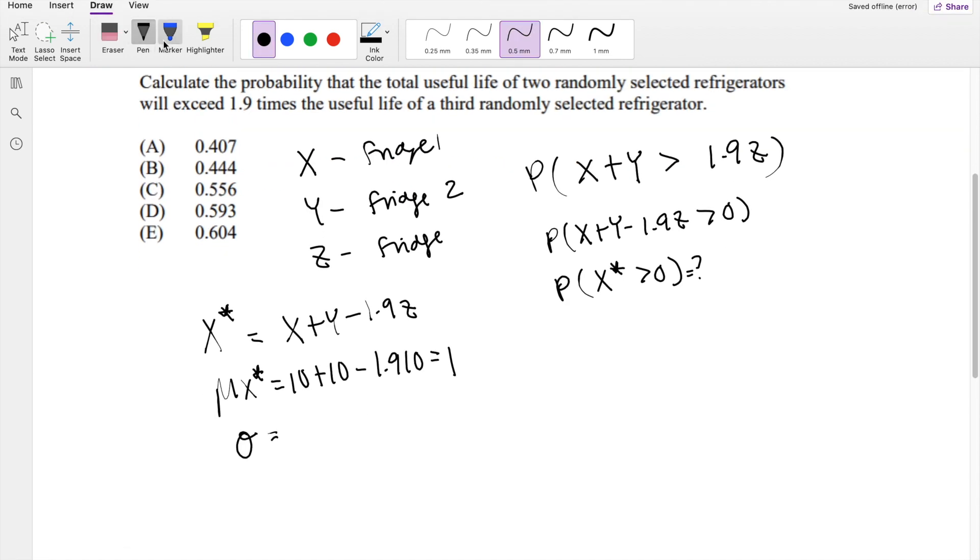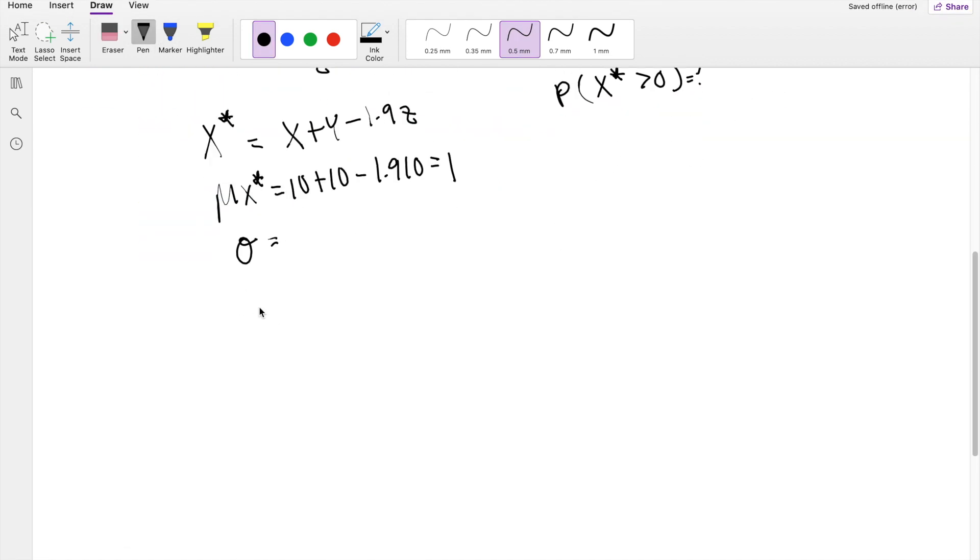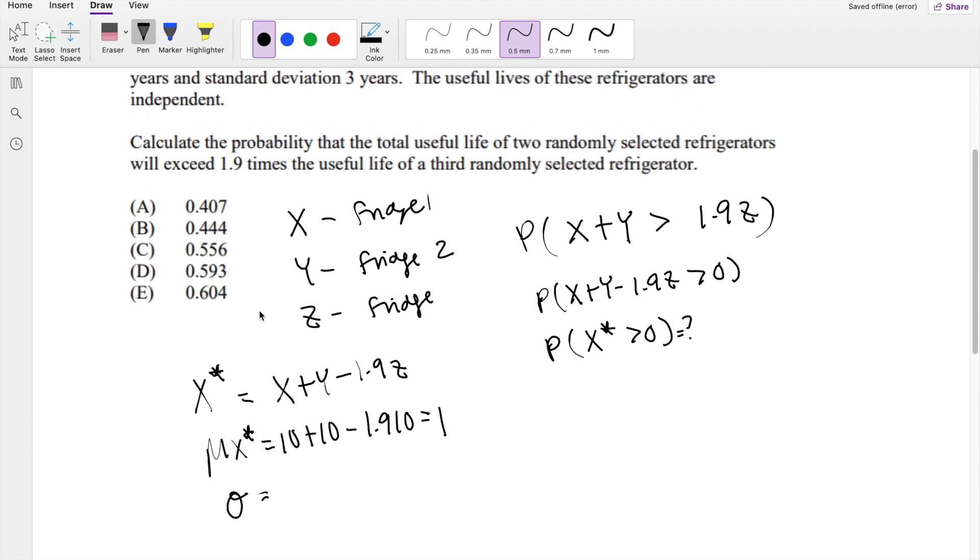And how about the standard deviation? Alright, so then we know the standard deviation is 3, and also we have, when we calculate standard deviation for multiple events, we have to make sure to bring it back to variance. So that's going to be 3 squared plus 3 squared, because negative 1.9 is just a constant, squared times 3 squared. So this is approximately equal to 7.1056.